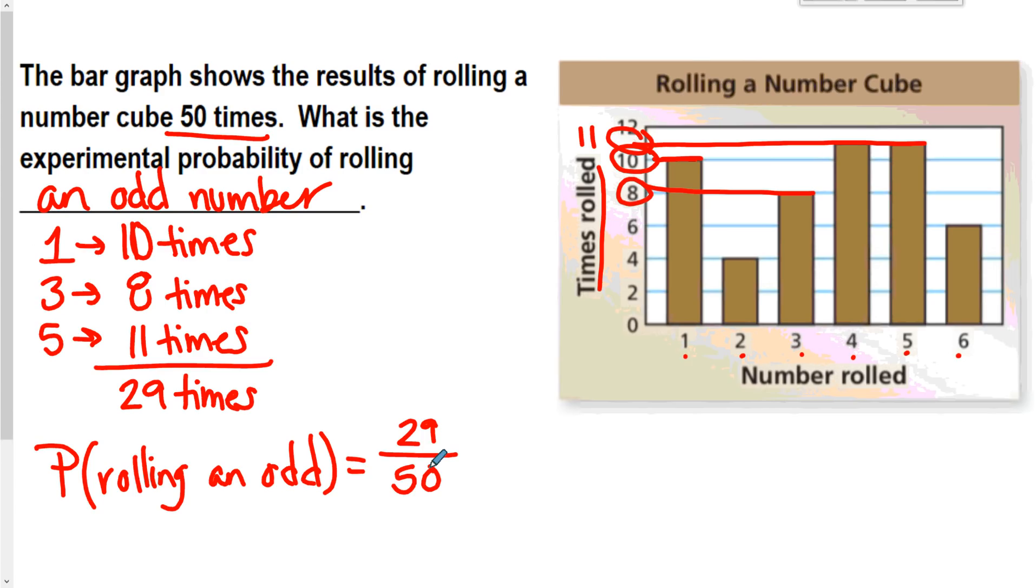So my probability is 29 over 50, and if I want to figure out the decimal version of that, 29 divided by 50, well, that gives me 0.58, which is 58%. So I'm actually a little bit higher than 50%. So I actually rolled an odd more often than I rolled an even.